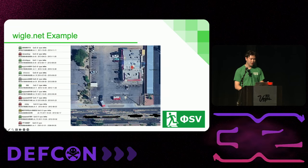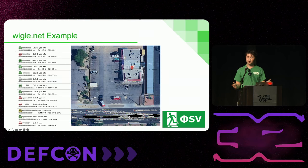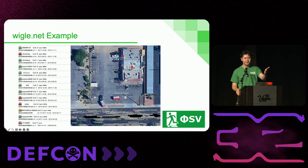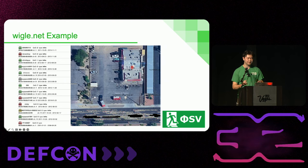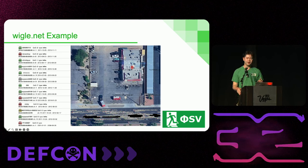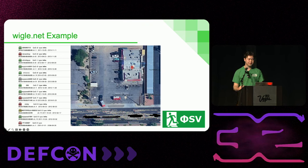Finally, a Wigle.net example for this investigation. It shows all the networks on the street — no one turned up into the actual lot, unfortunately. However you can see all those networks with varying levels of security, and it shows MAC addresses and SSIDs. Going back to what I said before, it's really useful to know what manufacturer made that router for exploitation purposes — a great addition to any investigation.